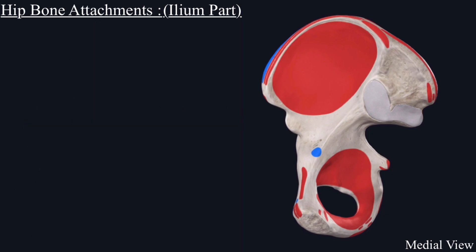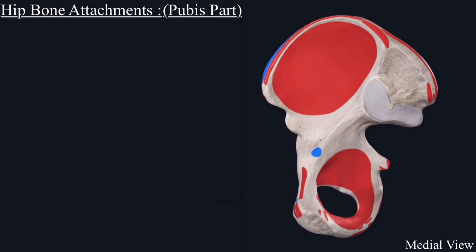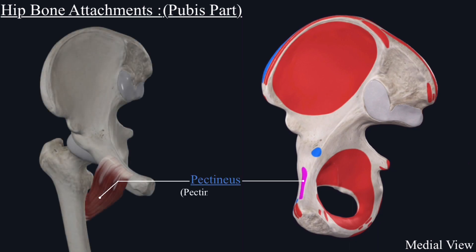Next is the pubis part attachment. From the pectineal line originates the pectineus muscle. The name of this muscle also suggests its origin — the pectineus muscle originates from the pectineal line.